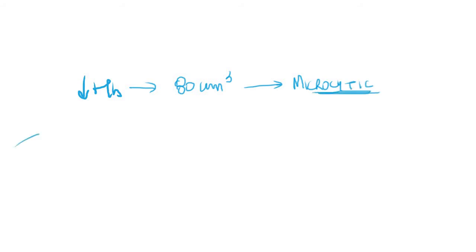Microcytic anemias may be due to decreased production of heme or decreased production of globin.